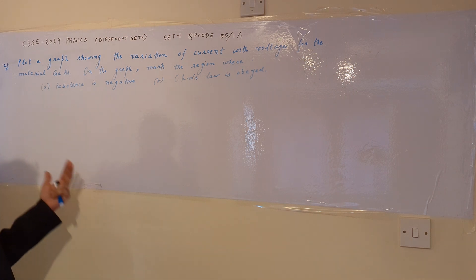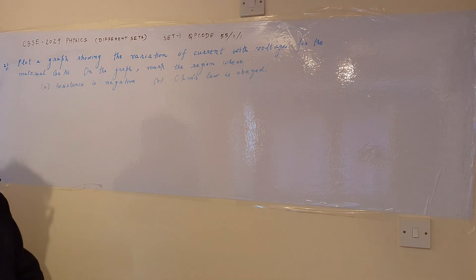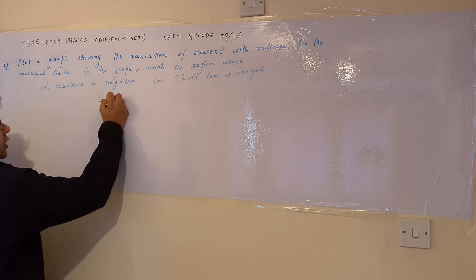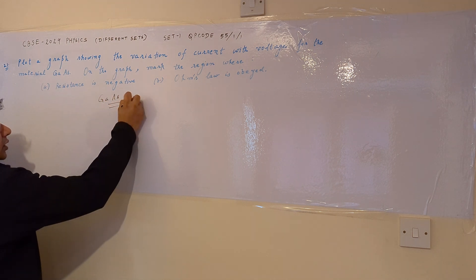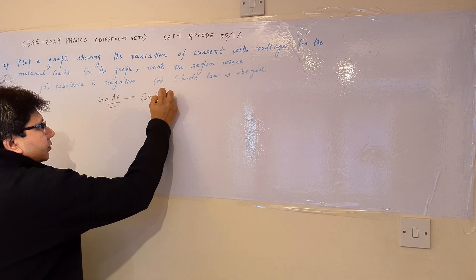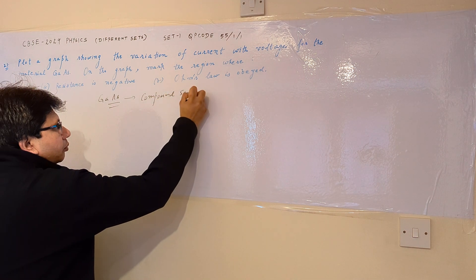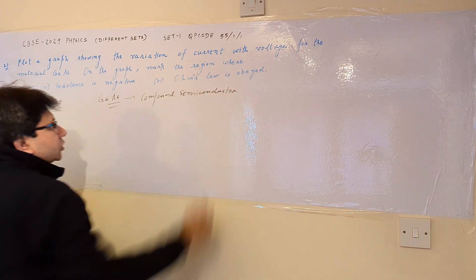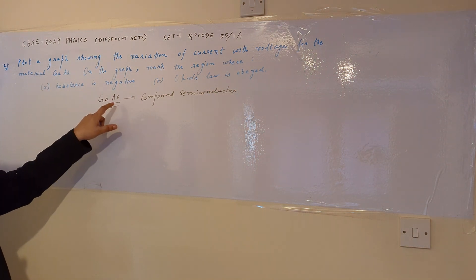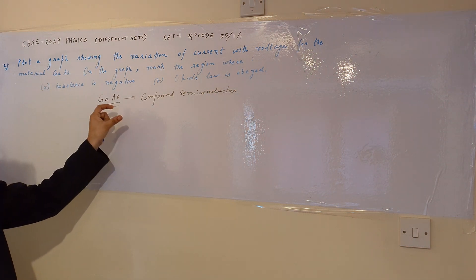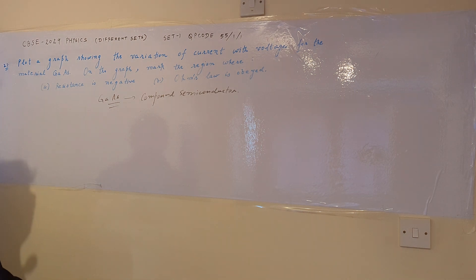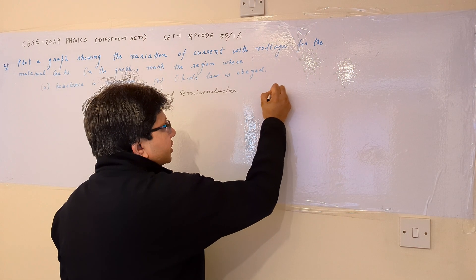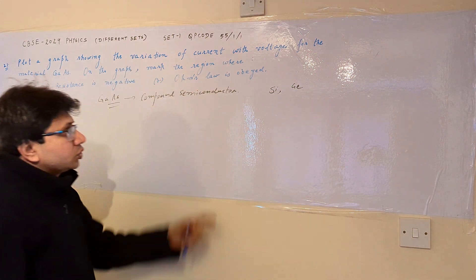The question is based on the graph between voltage and current for gallium arsenide. Gallium arsenide is a compound semiconductor, meaning it has gallium and arsenic as two different elements combined. In contrast, there are pure intrinsic semiconductors such as silicon and germanium — gallium arsenide is a different category of material.